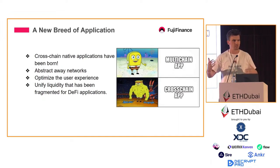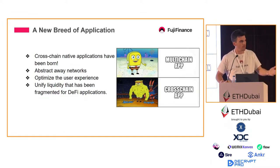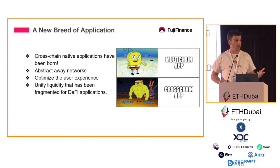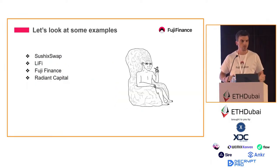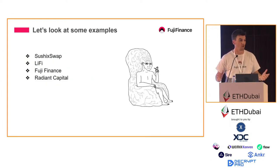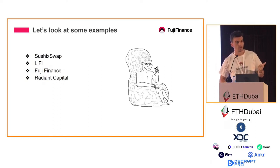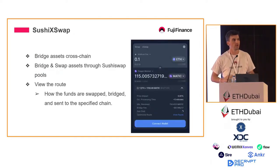This has now led to a new breed of application that we've seen over the last 6 to 18 months: cross-chain applications. The goal of these is to abstract away the use of individual networks to optimize the user experience, and for DeFi applications, to unify the liquidity that has now been fragmented. We're going to take a quick look at a few teams focusing on these solutions: SushiSwap/Sushi Foundation, LiFi, Fuji Finance — I'm a little biased there, I'm on the team — as well as Radiant Capital.